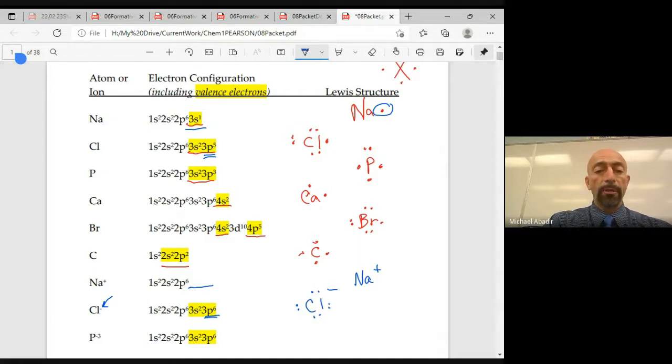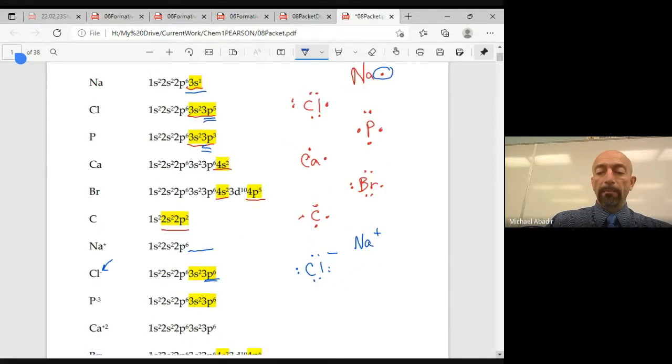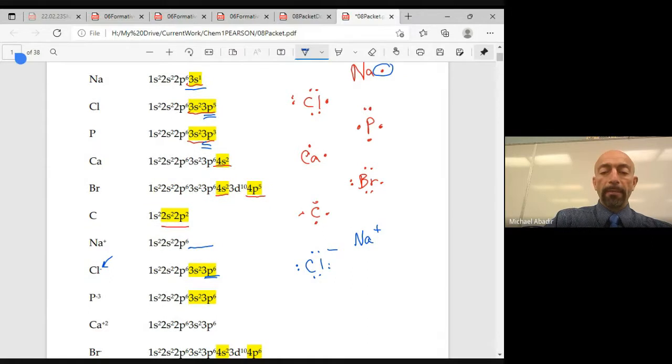Phosphorus ended in 3p3, and you know that it wants to gain three electrons. So that one is going to become phosphorus with eight electrons now after it gains three, and it's called the phosphide ion, and it has a negative three charge. If we look at calcium, remember calcium ended in 4s2. It tends to lose those two electrons. So those two dots would get erased, and you would simply have a calcium ion with a Ca plus two.